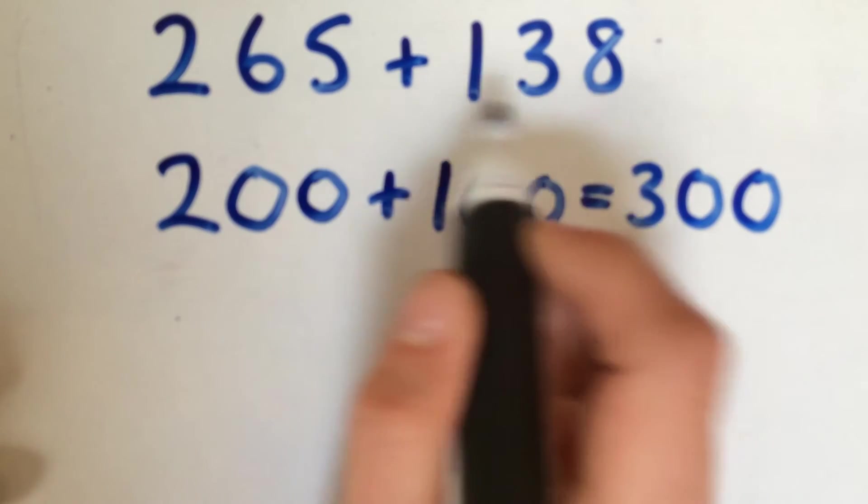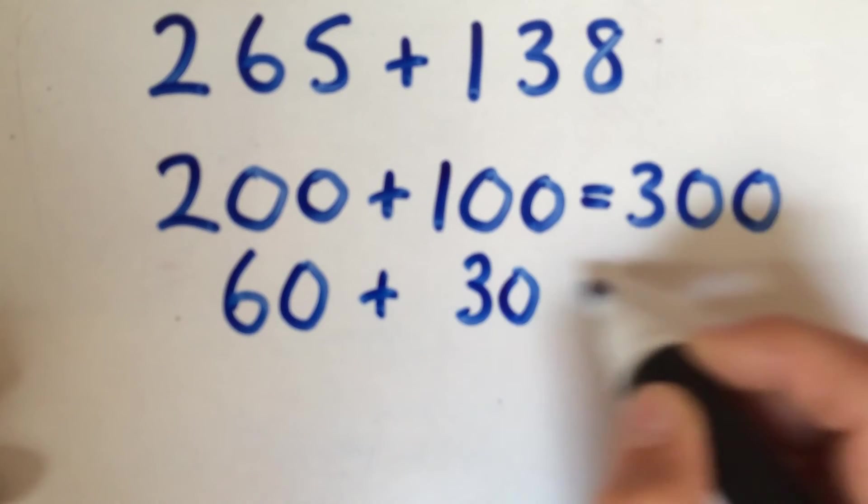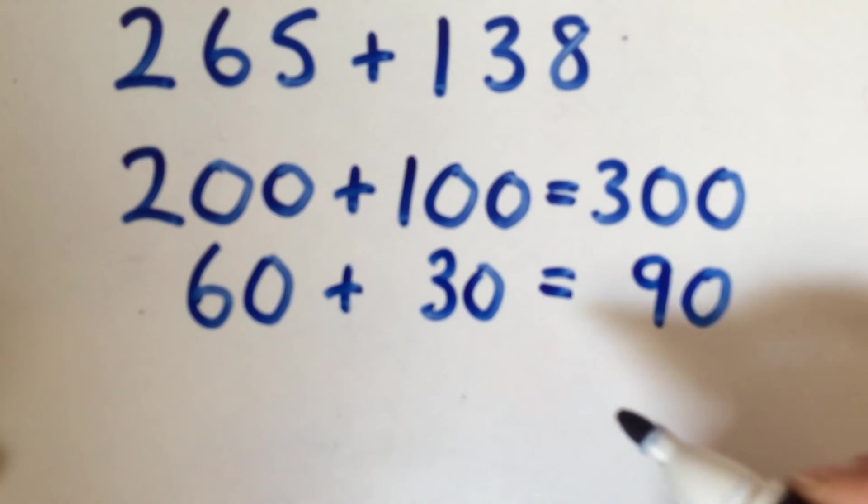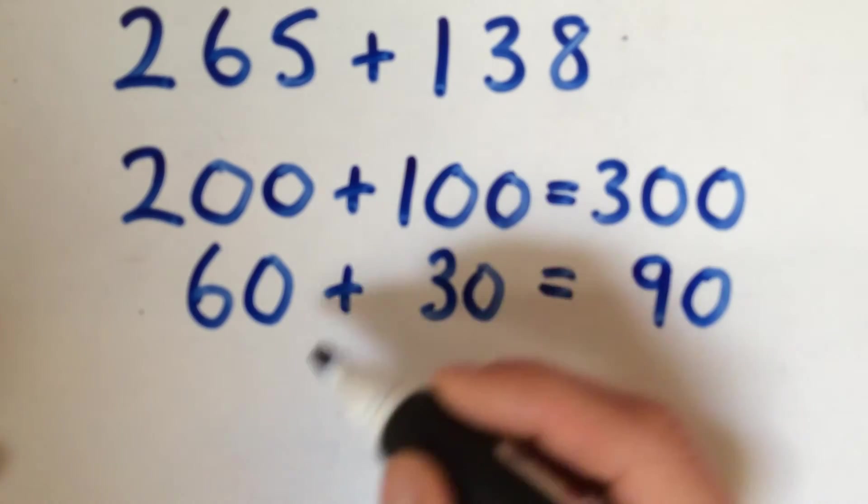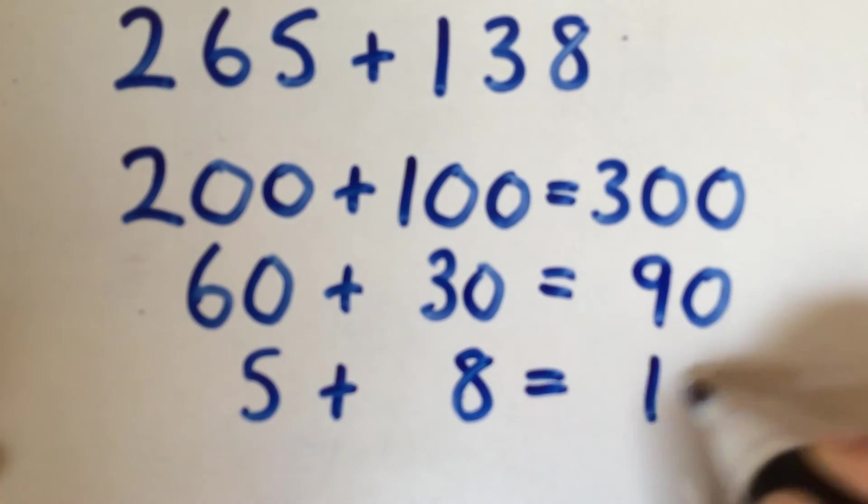Then taking the tens out of each number, so you've got 60 add 30, which would be 90. And then taking the units out of each number, so you've got 5 add 8, which gives 13 altogether.